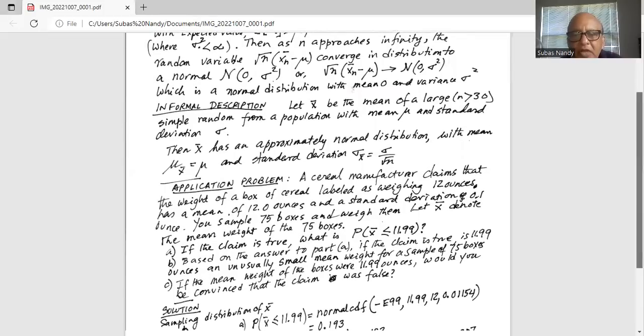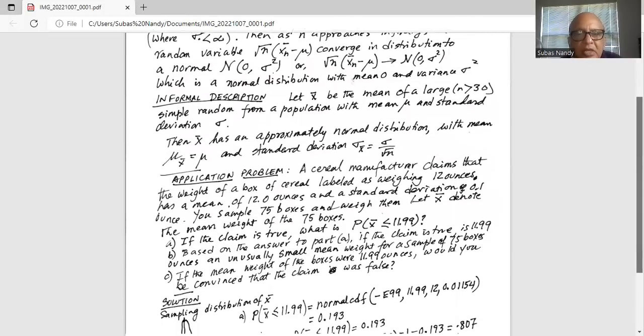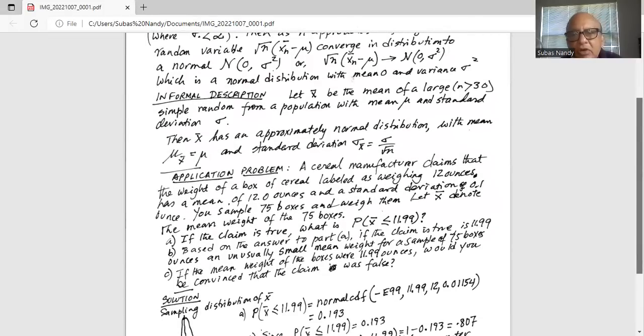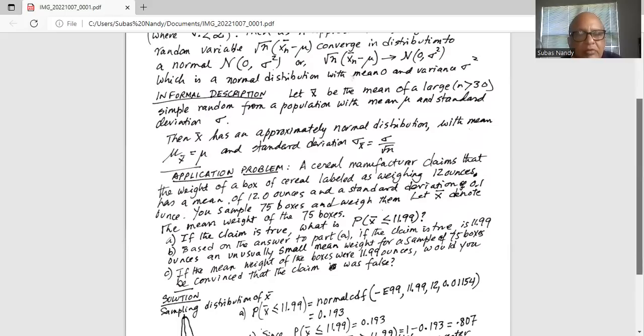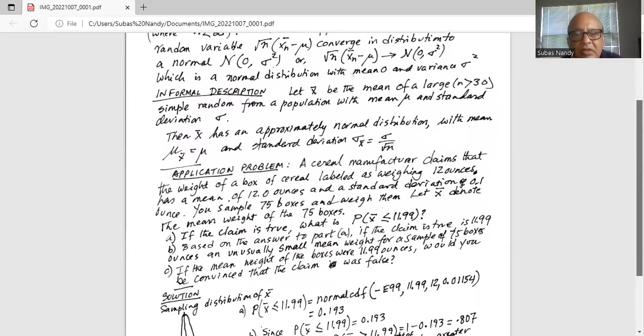A cereal manufacturer claims that the weight of a box of cereal labeled as weighing 12 ounces has a mean of 12.0 ounces and a standard deviation of 0.1 ounce.